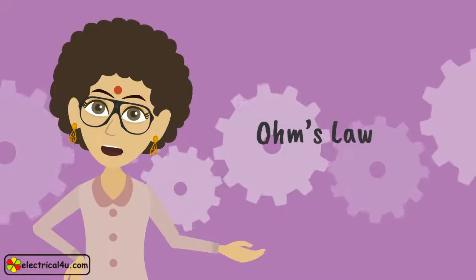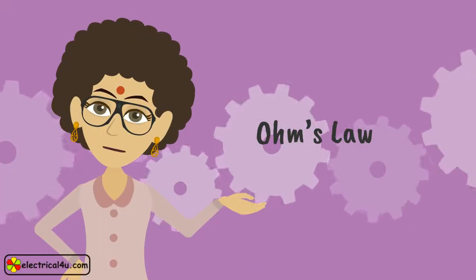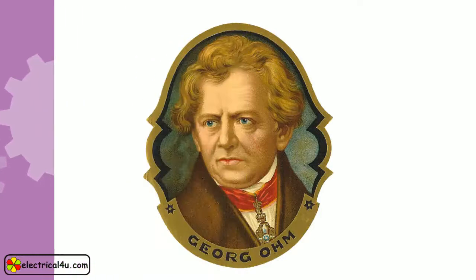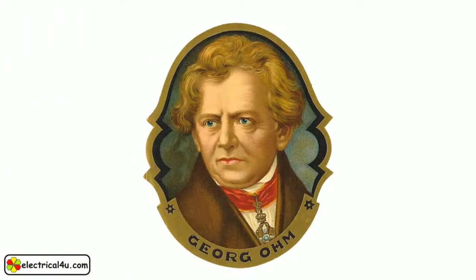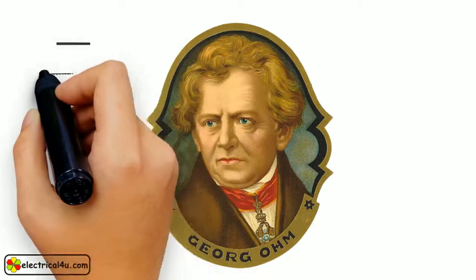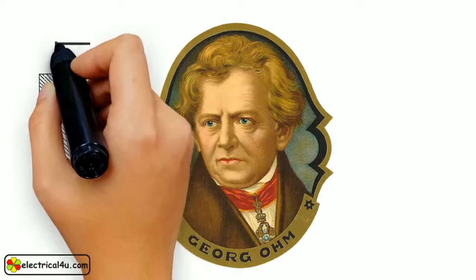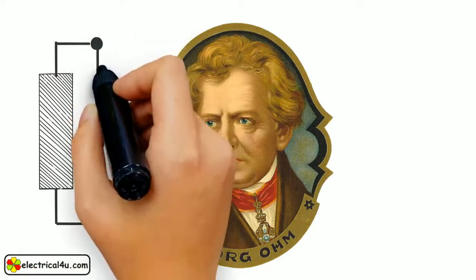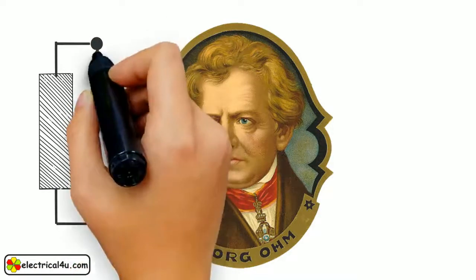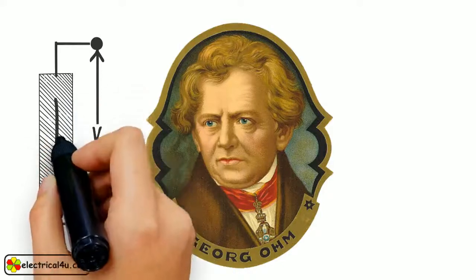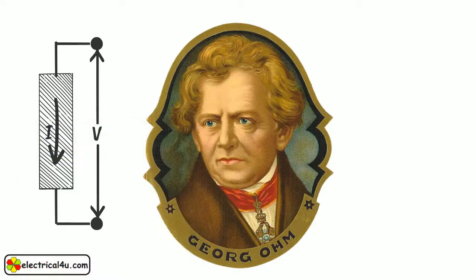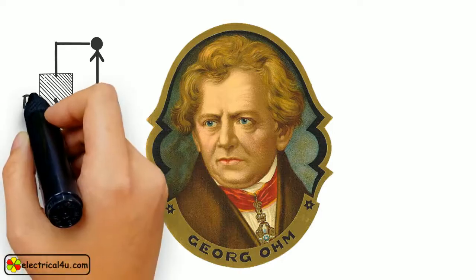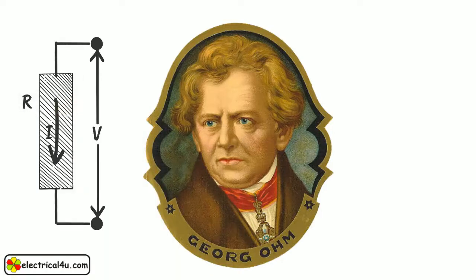Let us have a basic idea of Ohm's law. German physicist George Simon Ohm found that the voltage V between two terminals of a current carrying conductor is directly proportional to the current I flowing through it. The proportionality constant R is the resistance of the conductor.